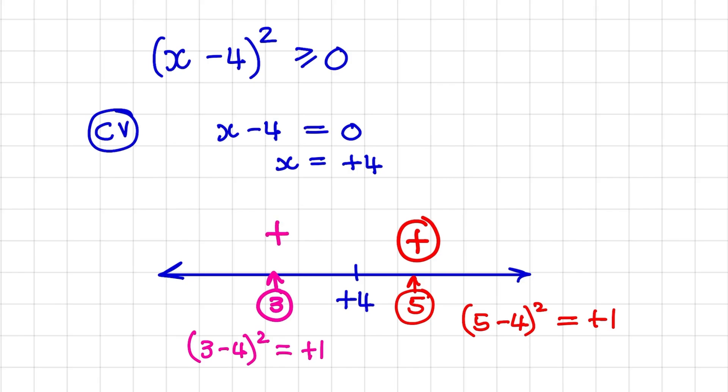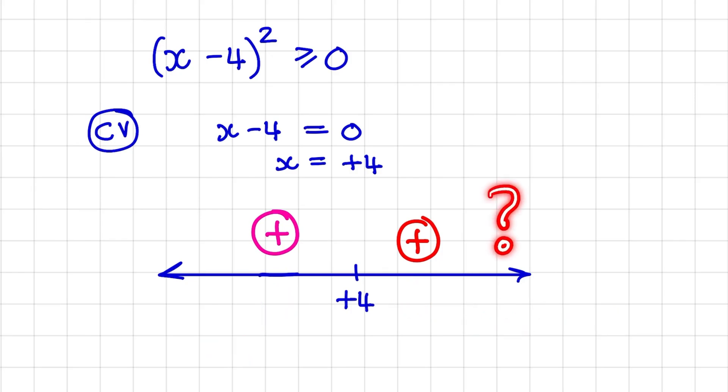So meaning, the equation is positive to the left and to the right of 4. So let me show you how this is possible.